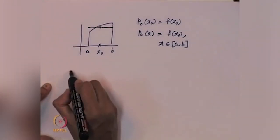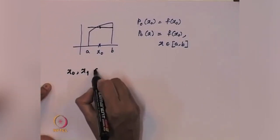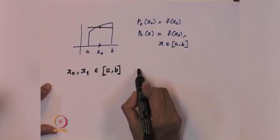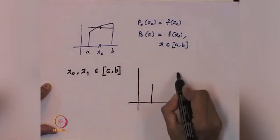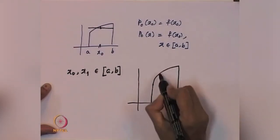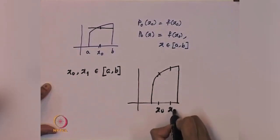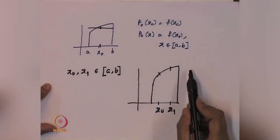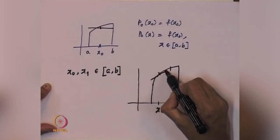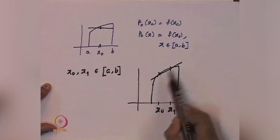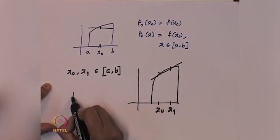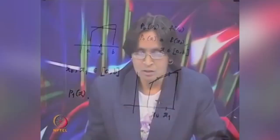Now let us look at the case when n equals 1. That means you have got two points x_0 and x_1 in the interval [a, b]. What we want is a linear polynomial — that is, a polynomial of degree less than or equal to 1. It is immediate that you just look at the values at x_0 and x_1 and then join by a straight line. So that is going to be p_1(x). Now let us look at the general case: we will have n+1 distinct points and fit a polynomial of degree less than or equal to n which agrees with f at these n+1 points.